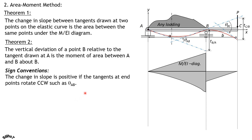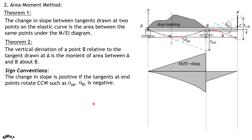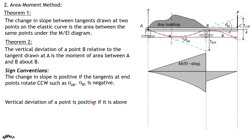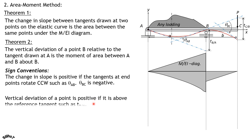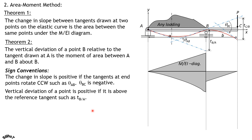The sign convention: the change in slope is positive if the tangents at end points rotate counterclockwise, such as theta AB; theta BC is negative. The vertical deviation of a point is positive if it is above the reference tangent, such as the deviation of B relative to A.